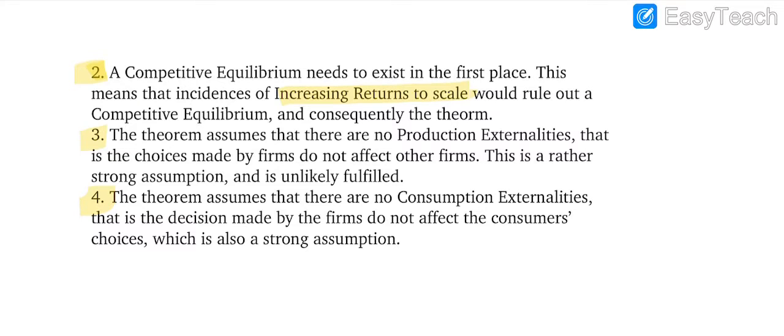The third point is that there are no production externalities - that is, choices made by firms do not affect other firms. You know there are two types of costs: internal cost and external cost. If production is affected by externalities, it will automatically affect the total production and the other firms that are linked with it.